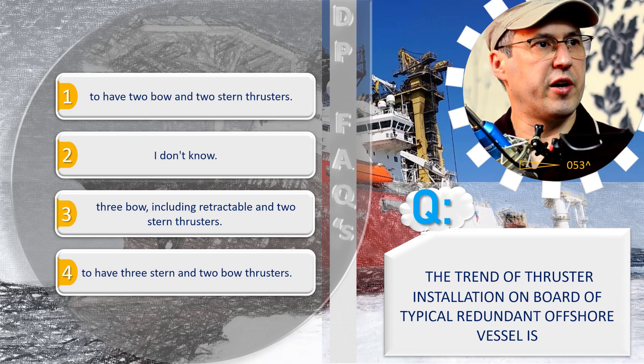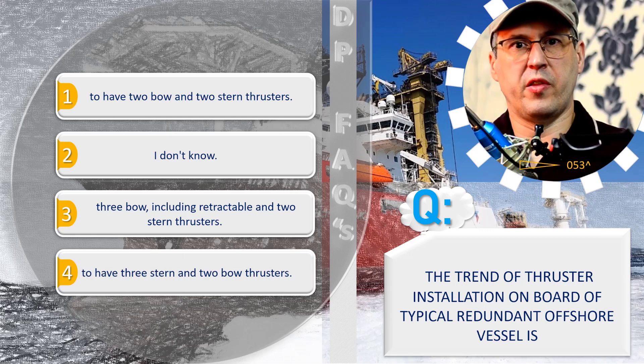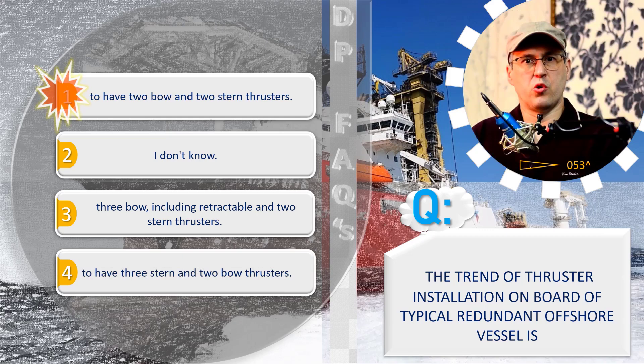What's your idea, please? Number one is the correct answer: to have two bow and two stern thrusters.